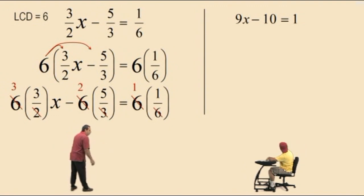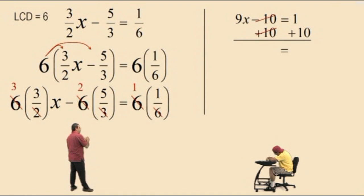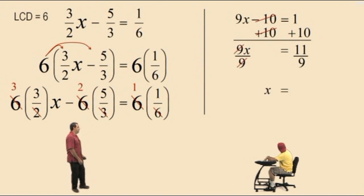Now, what do we do now? Add 10 to both sides. Add 10 to both sides. That leaves you with 9x on the left, 11 on the right. And to get to 1x, we divide both sides by what? 9. That's right. And so we get x equals 11 ninths. Very good. Whew.